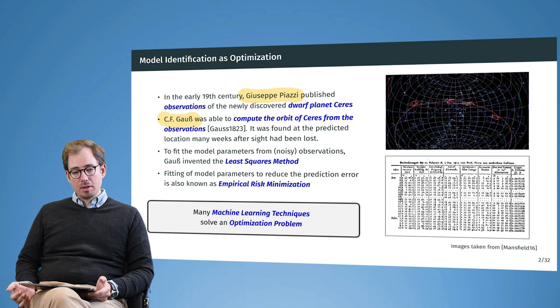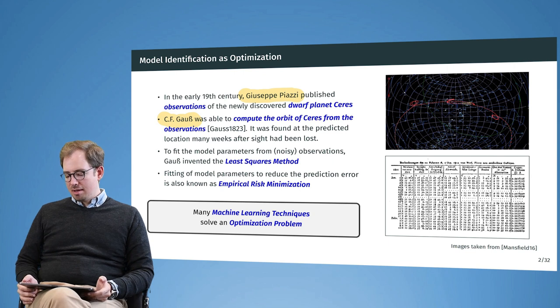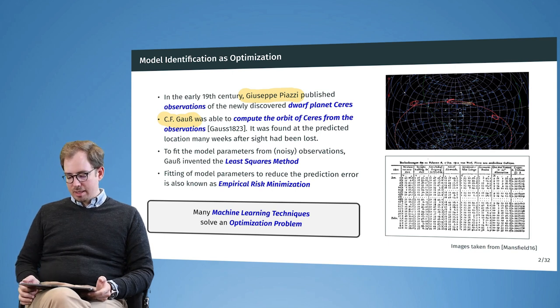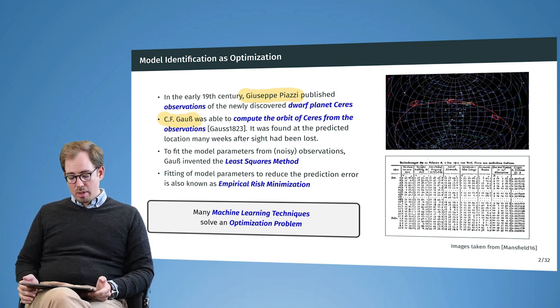He was able from the observations to compute a model that predicted the new location. As you may know, all planets are on an elliptic orbit around the Sun, so their orbits are pretty simple. The problem is that Earth is also on an elliptic orbit, and therefore the movement of Ceres from the point of view of Earth looks a little bit random, as you can see depicted in the upper right image.